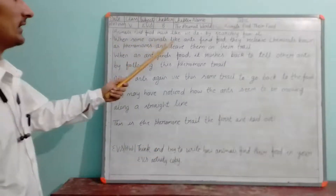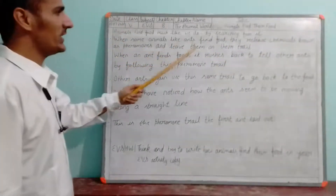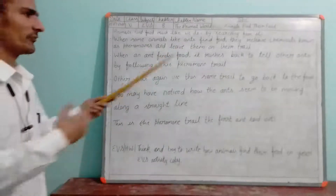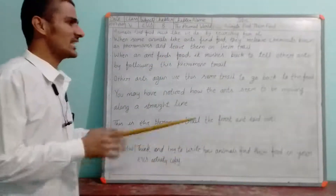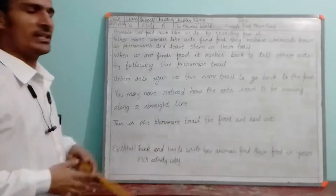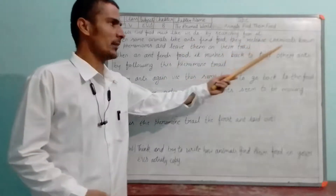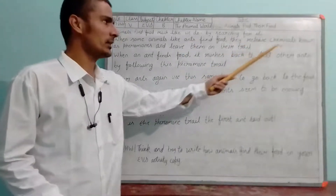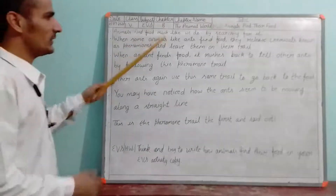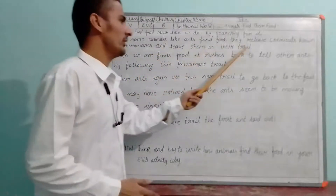When some animals like ants find food, they release chemicals known as pheromones and leave them on their trail. Ants have a special type of chemical which can be used as a symbol, like a perfume or a smell. They use it to search for food. When they get the food, they release that particular chemical — pheromones.